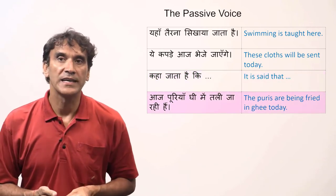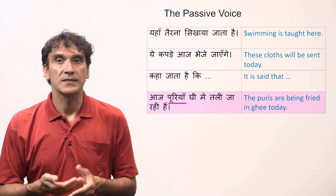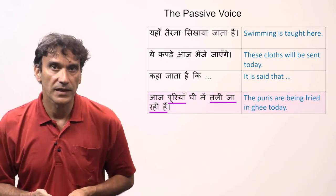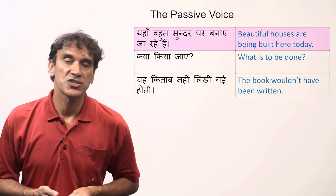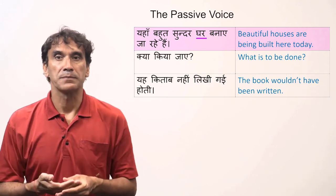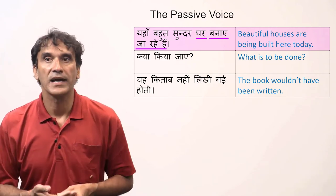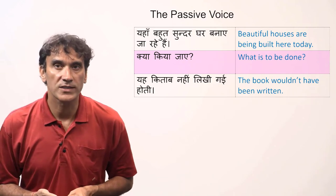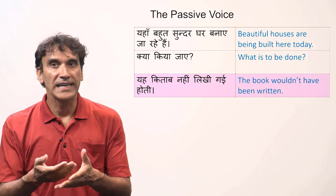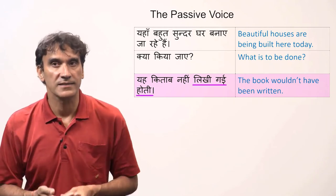'Aaj puriyan ghee mein tali ja rahi hai' — the puris are being fried in ghee today. 'Puri' is a feminine plural subject and the tense is present continuous, so 'tali ja rahi hai.' 'Yahaan bahut sundar ghar banaye ja rahe hain' — beautiful houses are being built here. The subject 'ghar' is masculine plural and the tense is present continuous. 'Kya kiya jaye' — what is to be done — is subjunctive in passive. 'Ye kitab nahi likhi gai hoti' — the book would not have been written — is a conditional sentence in passive.